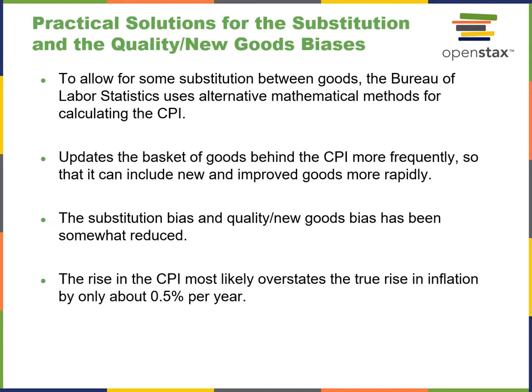Practical solutions for substitution and new goods bias include allowing substitution between goods, sometimes creating alternate CPIs based on those substitutions. Updating the basket of goods more frequently can also improve the indicator. Substitution bias has been somewhat reduced, giving a more realistic snapshot. The rise in CPI usually overstates the true rise in inflation by only about half a percent per year — so it's really not a lot of variance.